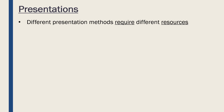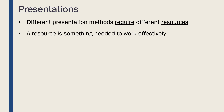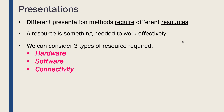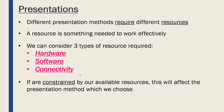Different methods require different resources — a resource is just something we need to work effectively. Certain methods have certain requirements which we need to try and fulfil. We are going to consider three types of resources: hardware resources, software resources, and connectivity requirements. Each method has different requirements under these three categories, and you might be set on using a certain method and then have to look at your requirements. Alternatively, you may be more constrained — thinking back to project management in LO1, if you have user constraints, such as not being able to use certain hardware or software, you are going to have to make other choices and be constrained by what you have available, which will affect your decision to choose one method over another.